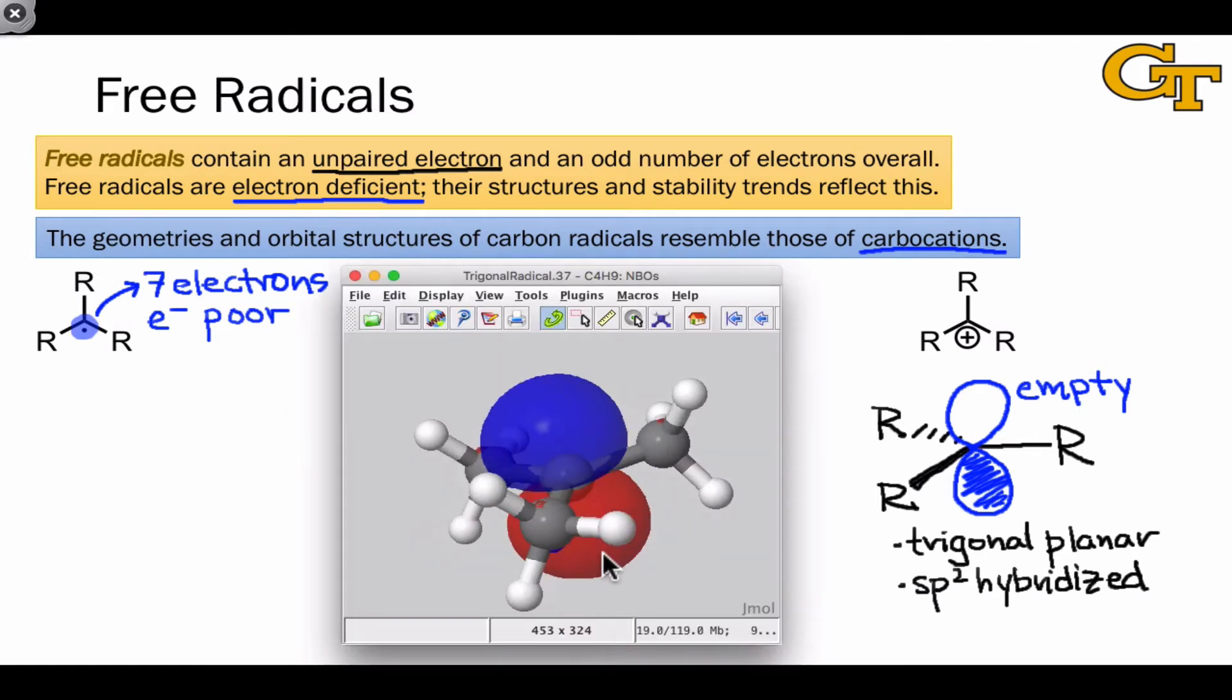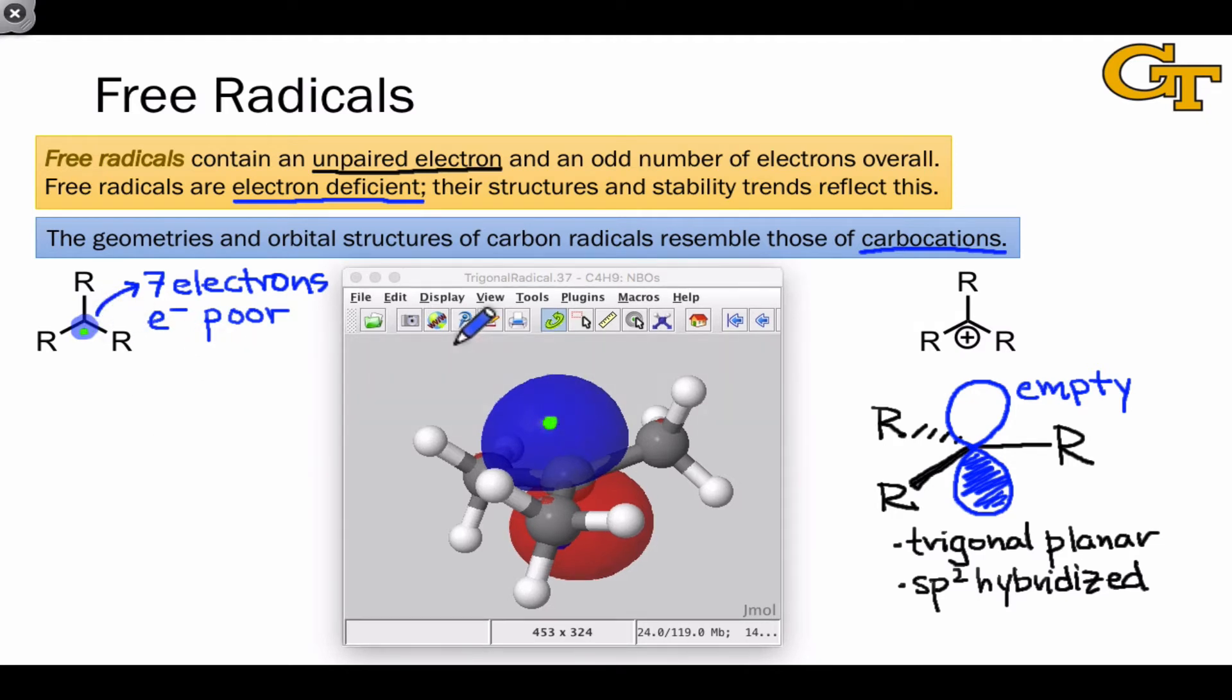And just to emphasize this point, here is a calculated structure for the tert-butyl radical, in which the radical carbon is connected to three methyl groups. This orbital that's shown in the center is the half-filled orbital of the radical, and so this green dot I'm drawing here signifies the radical electron. In the radical, this orbital is half-filled, meaning it contains one electron.